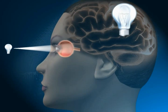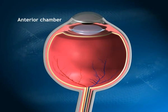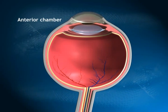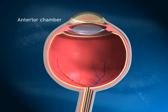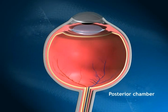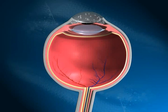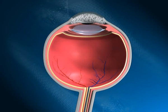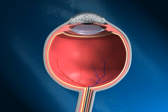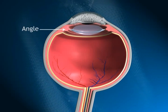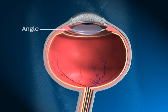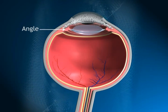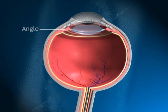The eye has a front or anterior chamber and a back or posterior chamber. A clear fluid called aqueous humor collects in the anterior chamber of your eye. The fluid then gets drained through a spongy meshwork in an area called the angle.